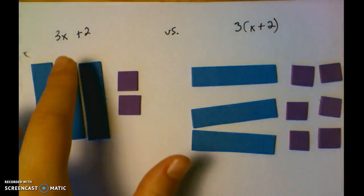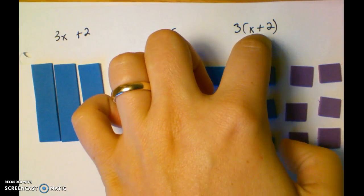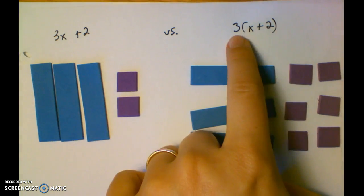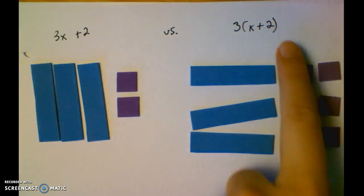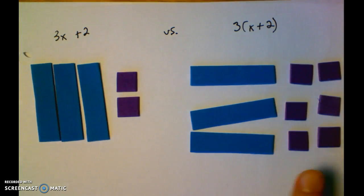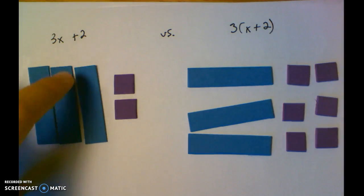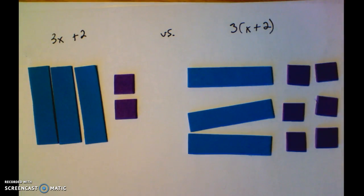So even though on the surface these expressions look very similar, the parentheses here make for a very different number of actual tiles, because here we have three sets of x plus 2, whereas here we only have three of the x's, and then the 2s are separate.